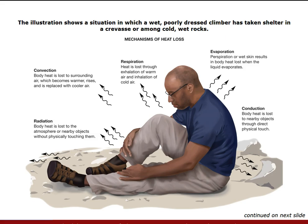Heat loss occurs through five different types of mechanisms. Radiation — body heat is lost to the atmosphere or nearby objects without physically touching them. Convection — body heat loss to surrounding air, which becomes warmer, rises, and is replaced with cooler air. Conduction — body heat is lost to nearby objects through direct physical touch; for example, if the patient is placed on a metal scoop stretcher, it will pull the heat out of the patient's body, causing them to become hypothermic. Evaporation — perspiration or wet skin results in body heat lost when the liquid evaporates. And respiration — heat loss through exhalation.